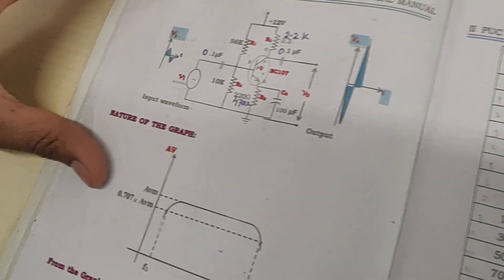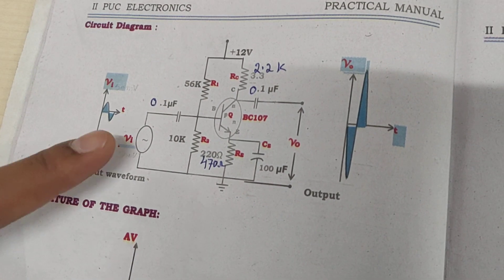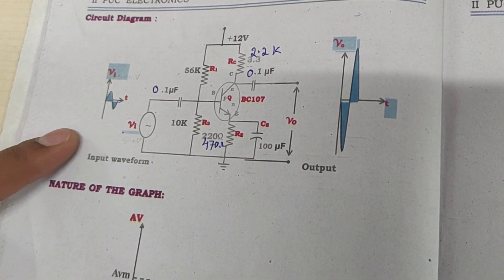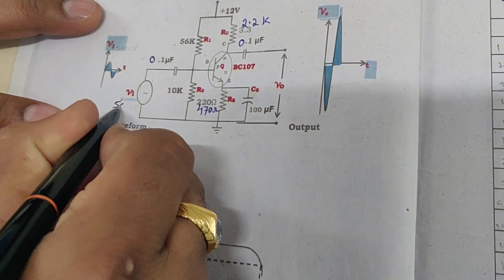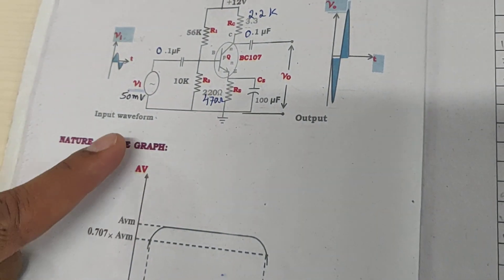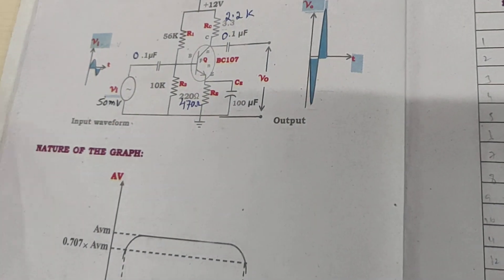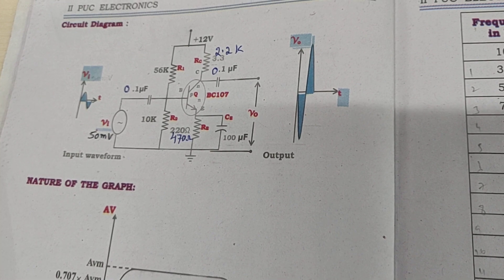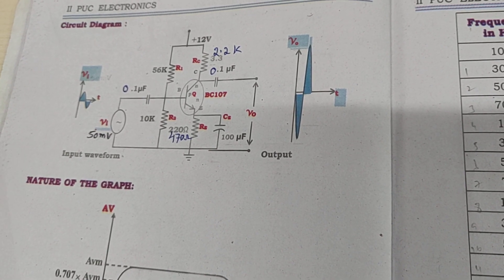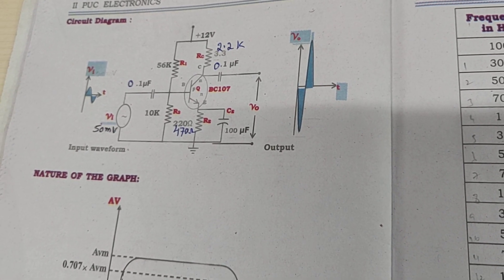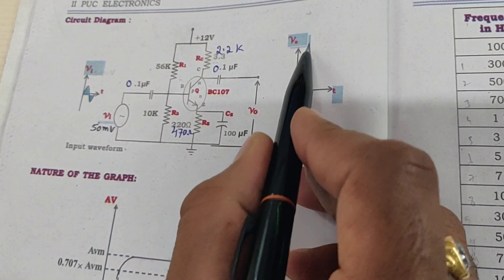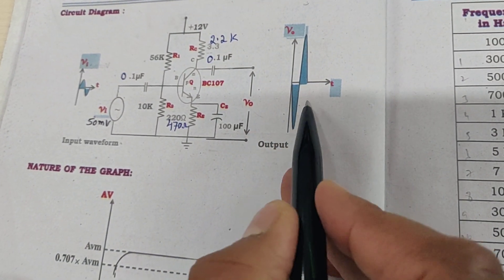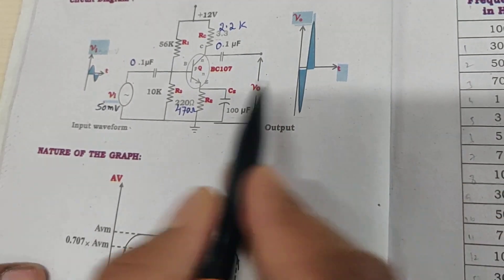This is the circuit diagram of the CE amplifier. We are applying 50 millivolts weak signal here. An amplifier is a device which can strengthen a weak signal into a strong signal in terms of amplitude without changing the frequency.